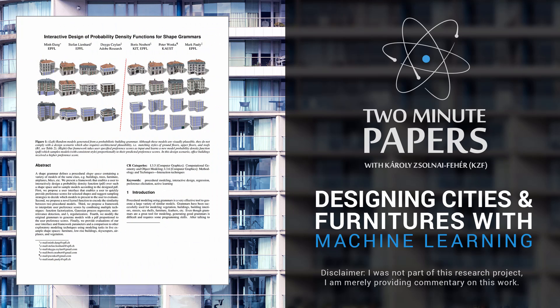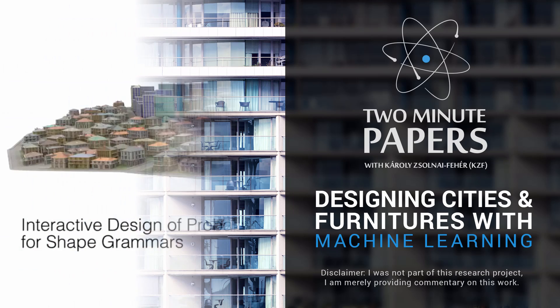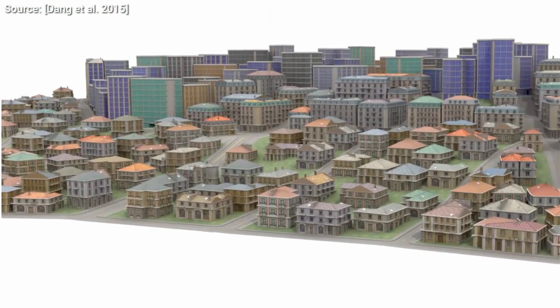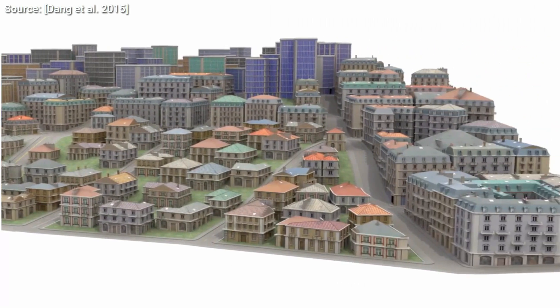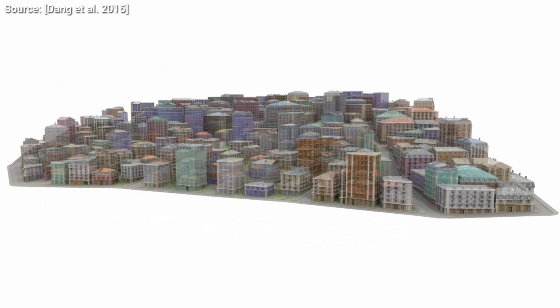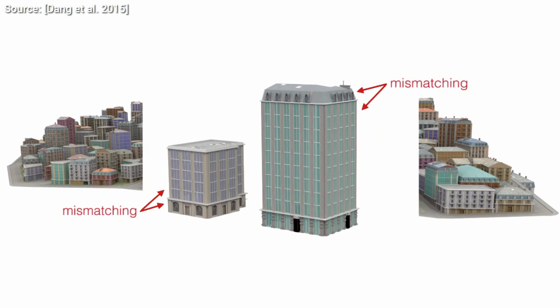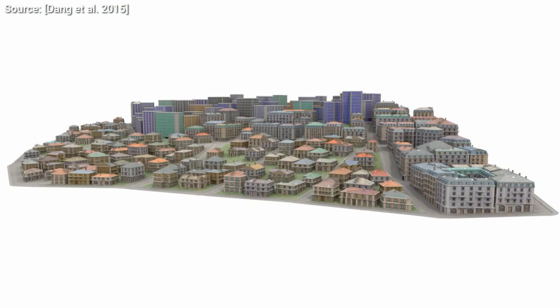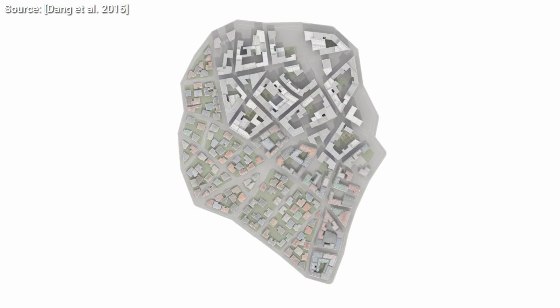Dear Fellow Scholars, this is Two Minute Papers with Károly Zsolnai-Fehér. Creating geometry for a computer game or a movie is a very long and arduous task. For instance, if we would like to populate a virtual city with buildings, it would cost a ton of time and money, and we would need quite a few artists. This piece of work solves this problem in a very elegant and convenient way.